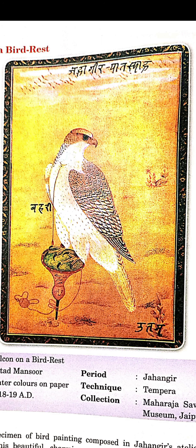Kyunki kalakar apna kahin kahin lekhan kaari bhi kiya karte the. Aur chitra ko banane ke baad, phir isme fulkaari design mein, floral design mein border bhi banaya gaya hai — border ko haashiya bhi kehte hain. Toh border ki rachna ki gayi hai, border banakar chitra ko baaqaida frame kiya gaya hai.